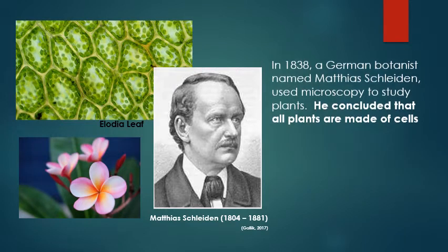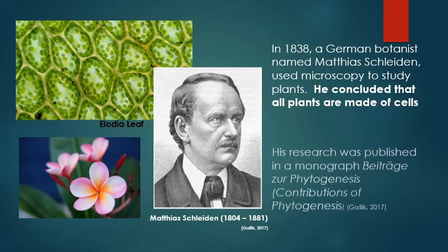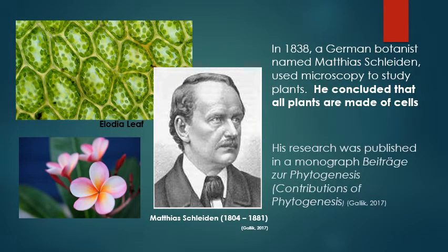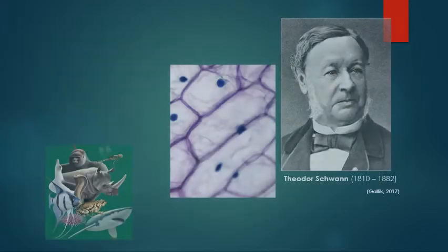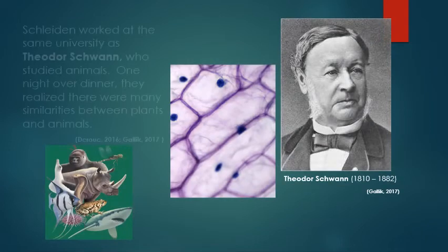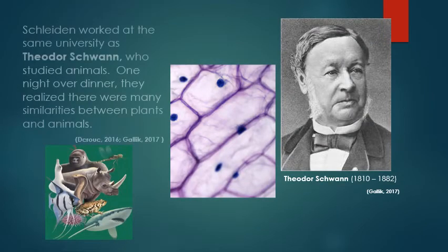Matthias Schleiden, a German botanist, used microscopy to study plants. He concluded that all plants were made of cells. Schleiden worked at the same university as Theodore Schwann, who studied animals.